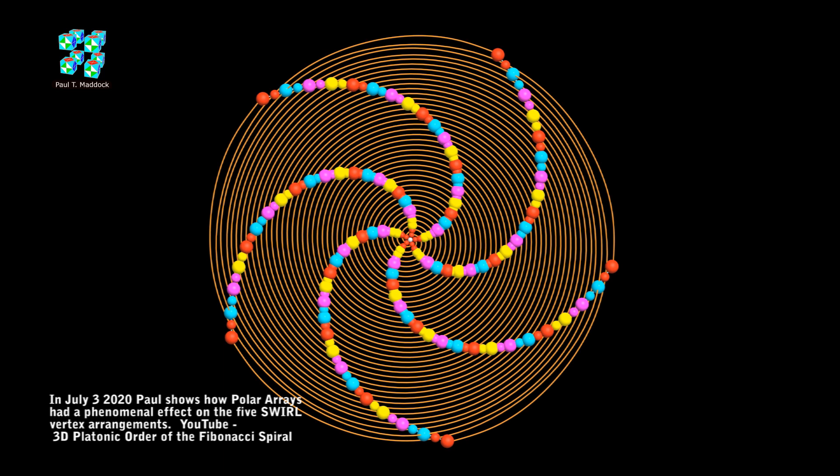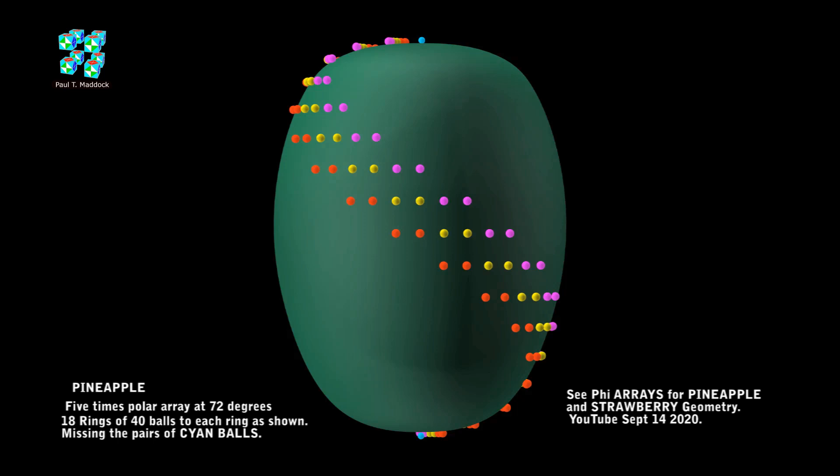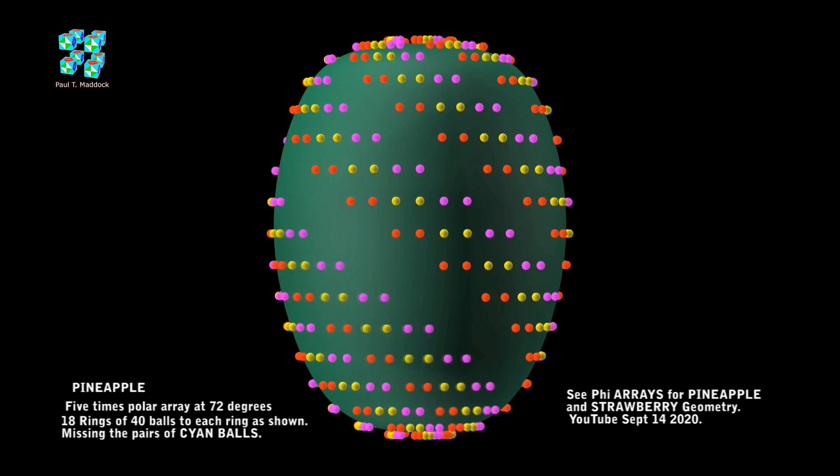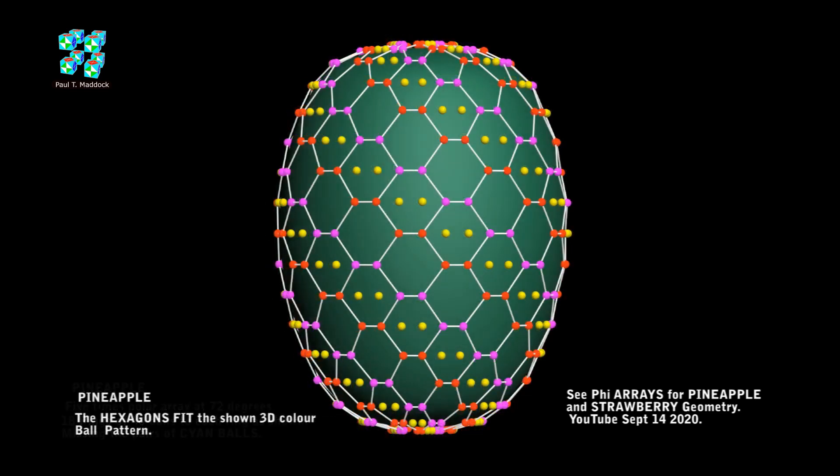Anyways, I played around with these new discoveries and started working on the geometry of a pineapple. I've made 18 rings of 40 colored balls. The balls are red, yellow, purple and I've left the cyan pair out. So by showing an array of five copies, that makes up 40 balls. The reason I left the cyan balls out is because you can see I can put hexagons into the configuration.